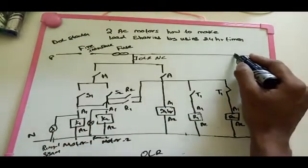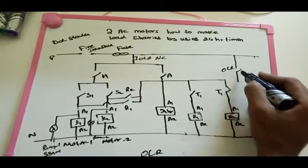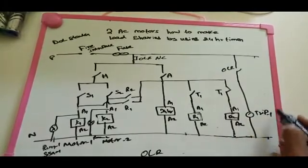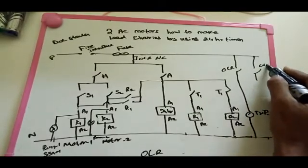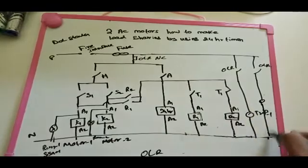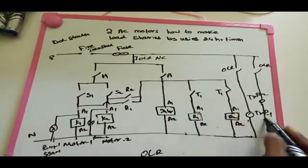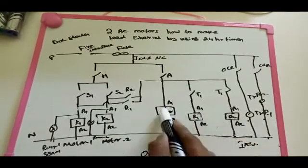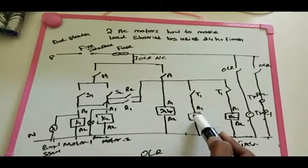After that we make NC contacts here. We'll make trip indication - trip indication means fault time occurs. So here we need to add the NC contacts. Trip 1 and trip 2 for motor 1 and motor 2.